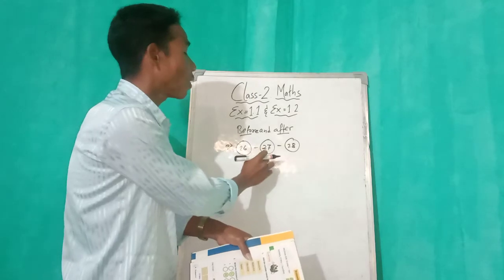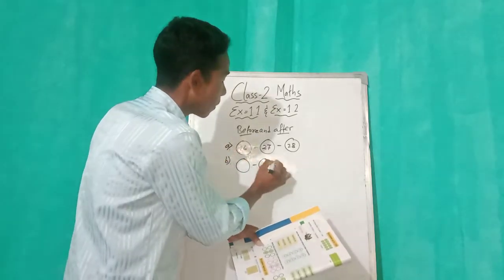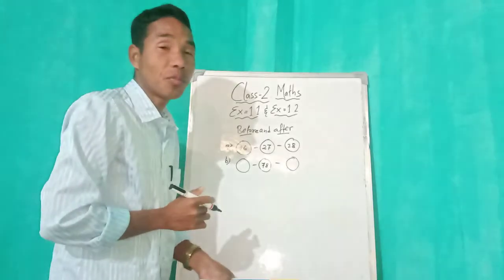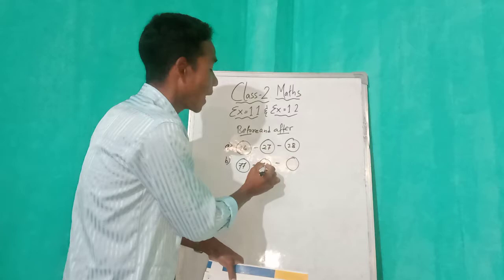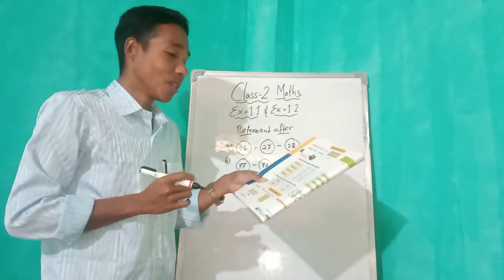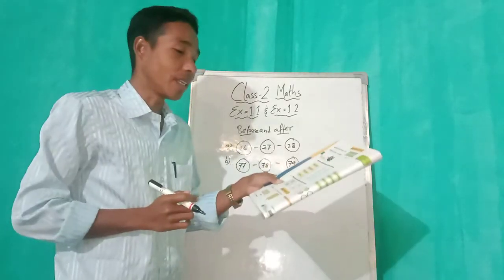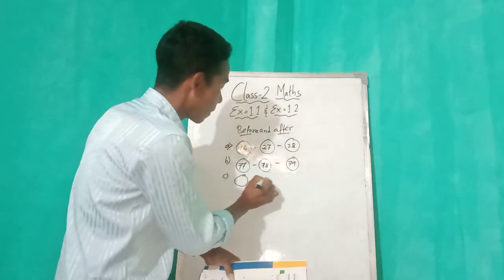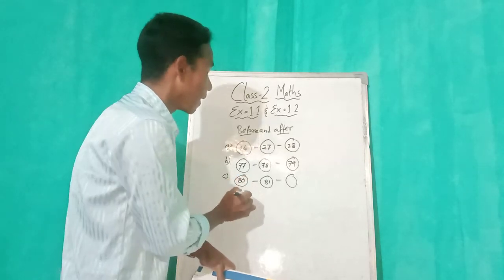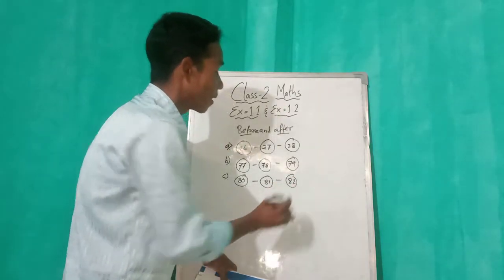Number B — can you see number B? In the middle we have 78. Before 78 which number comes? 77. And after 78? 79. It's very easy. Number C we have 81 in the middle. Which number comes before 80? Have you got it?